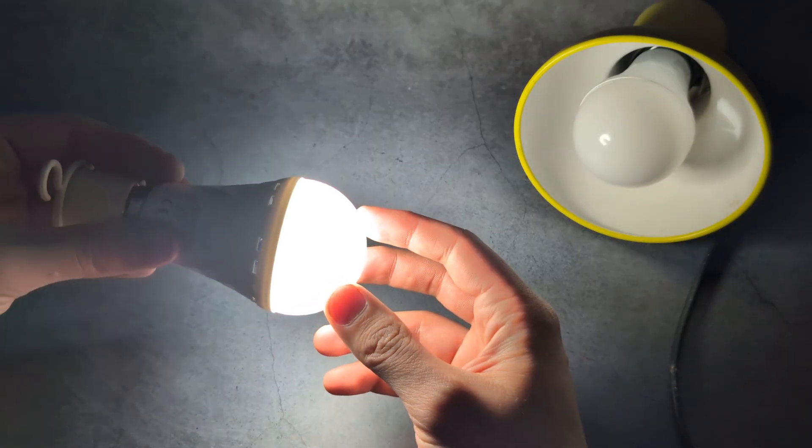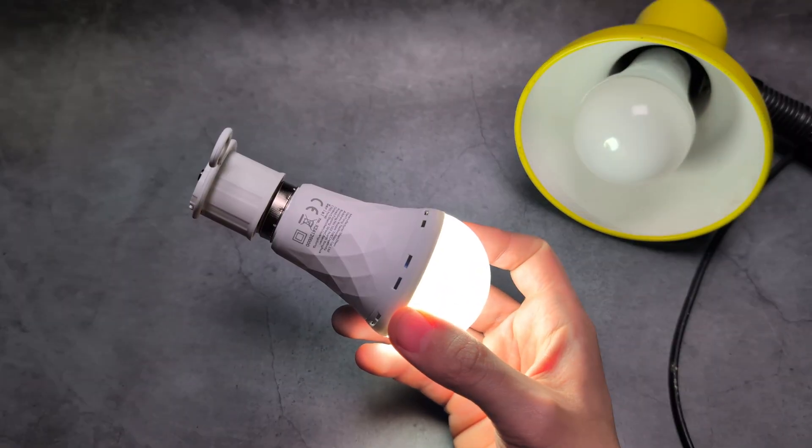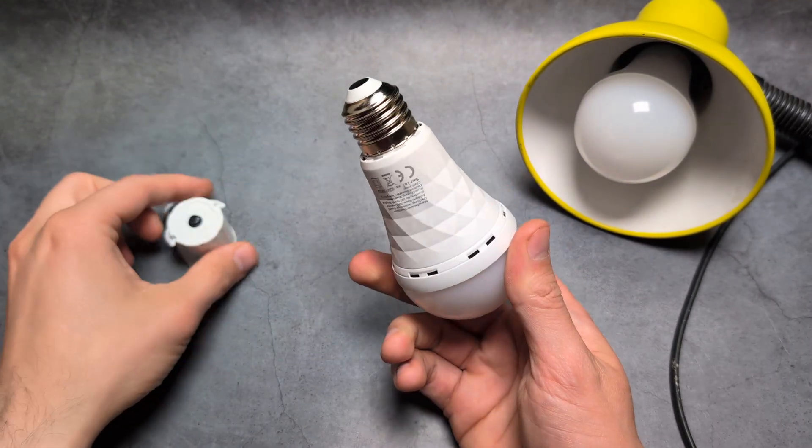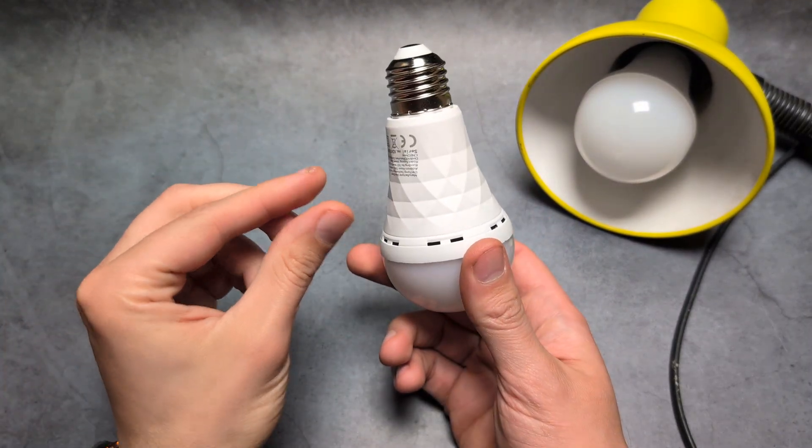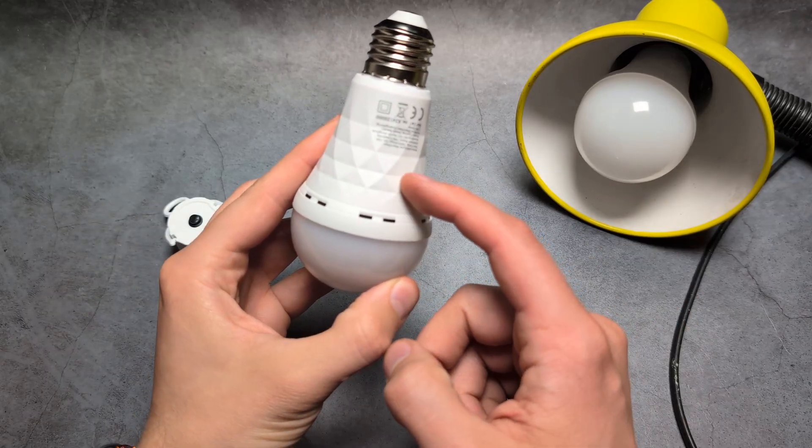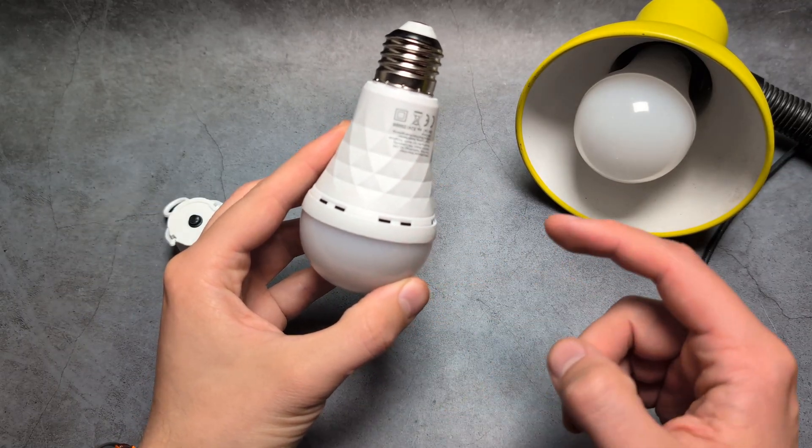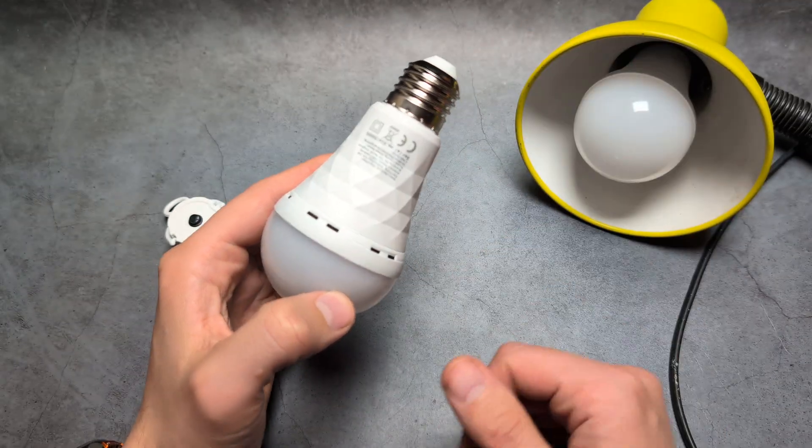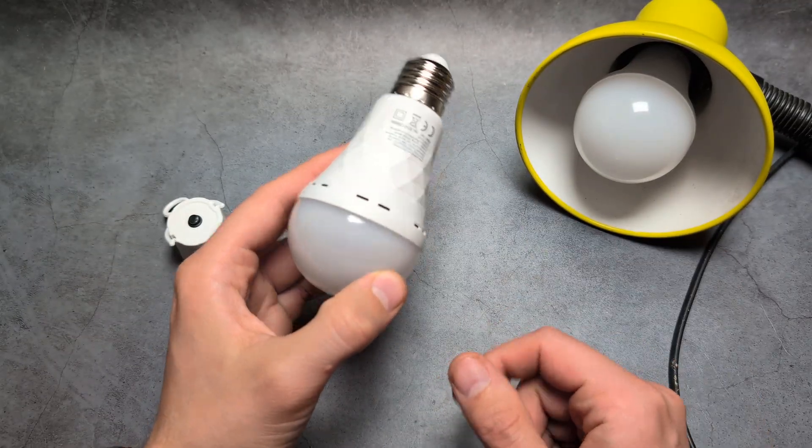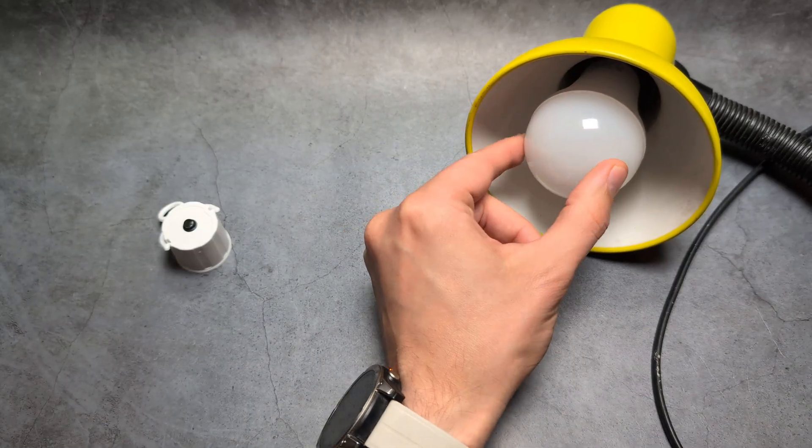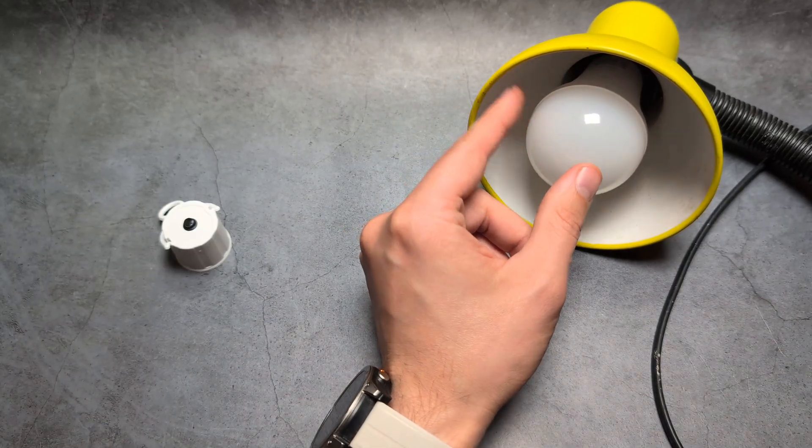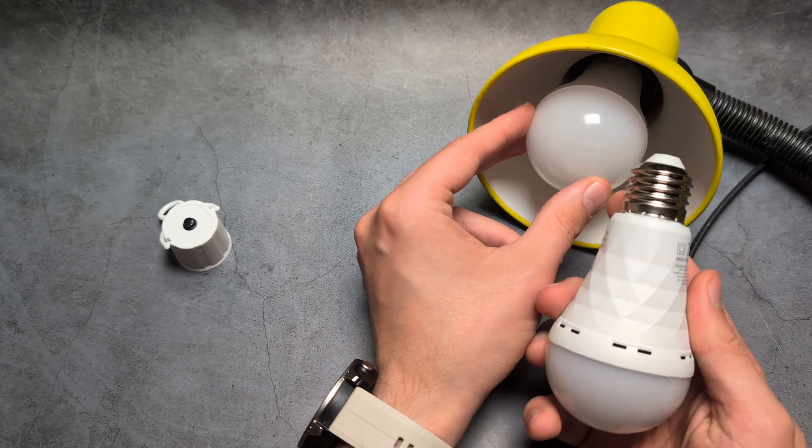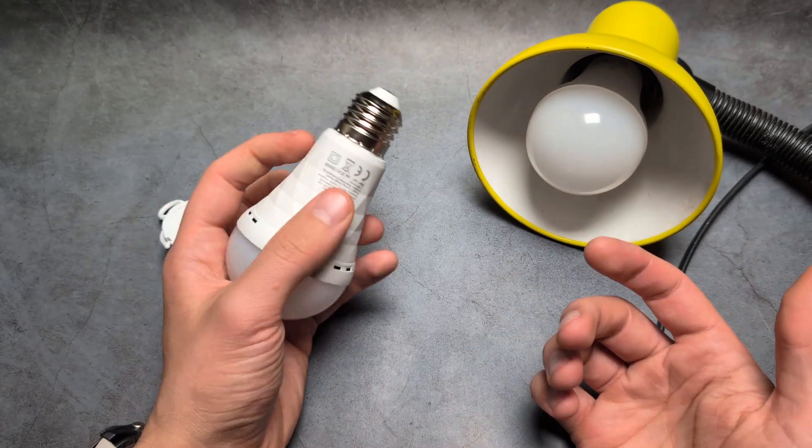If you're wondering how to recharge this, there are multiple different versions. Some of them even have USB Type-C so you can plug in a charger directly without having to insert in the light fixture. But as long as you have it in the light fixture, the bulb will recharge itself while it's running. You do not have to charge it separately.